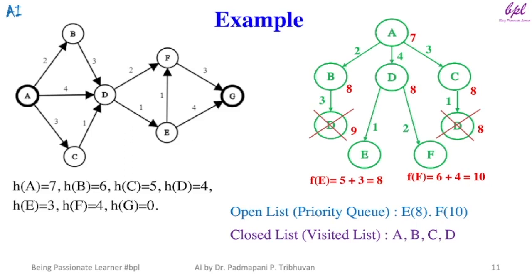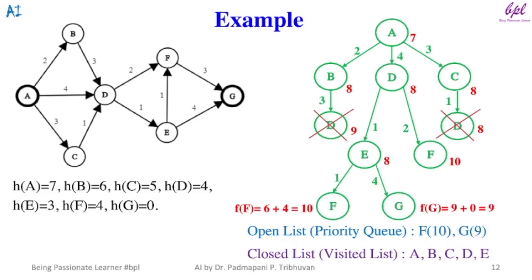Node E is not a goal node, so it will be explored and added to the closed list. Node E has two successors: node F and node G. f(F) = 6 + 4 = 10, and f(G) = 9 + 0 = 9. Node F is already in the open list with the same evaluated value of 10, so this value will not be updated and this path is considered a dead end.